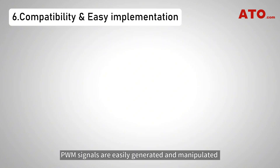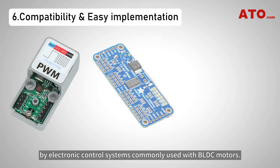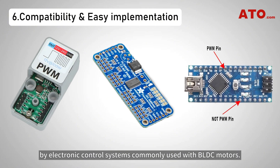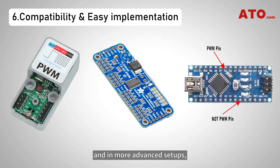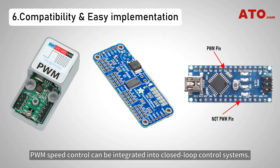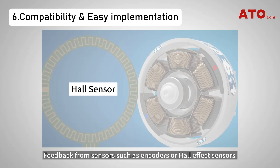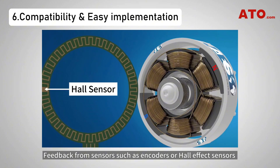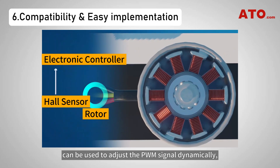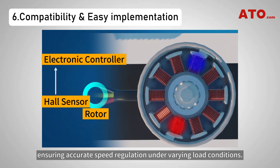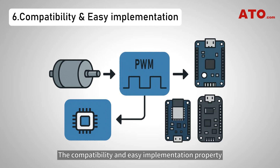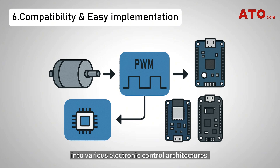PWM signals are easily generated and manipulated by electronic control systems commonly used with BLDC motors. Most microcontroller systems have built-in PWM capabilities, and in more advanced setups, PWM speed control can be integrated into closed-loop control systems. Feedback from sensors such as encoders or Hall effect sensors can be used to adjust the PWM signal dynamically, ensuring accurate speed regulation under varying load conditions. This compatibility and easy implementation makes PWM an ideal method for integrating speed control into various electronic control architectures.